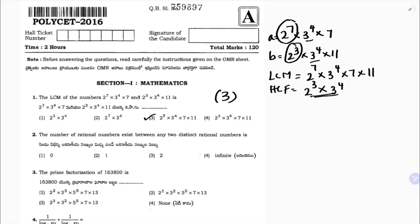Second question: how many rational numbers exist between any two distinct rational numbers? You can take 2 and 3, or fractions like 1/2 and 1/3. The answer is infinite, because between any two rational numbers infinitely many rational numbers exist — this topic is covered in 8th class.